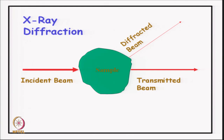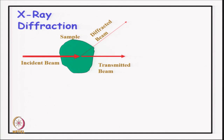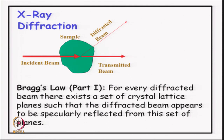You can have more than one diffracted beam from the same crystal under the same conditions. These diffracted beams from the sample, if analyzed properly, can be used to solve the crystal structure, because the direction and intensity of these beams depends upon the crystal structure. Bragg simplified this analysis by a very important observation — what I have written as Bragg's law part 1.